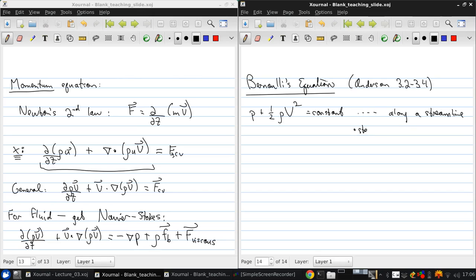And that's for steady, inviscid, incompressible flow. But what about between streamlines? Can we ever apply the Bernoulli equation across or between streamlines? The answer is, and we'll discuss this in more detail next time, only if the flow is irrotational.